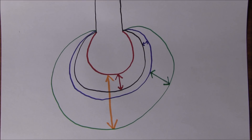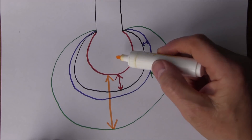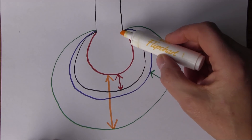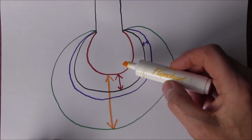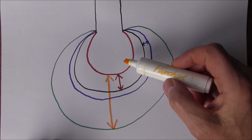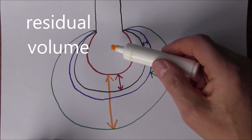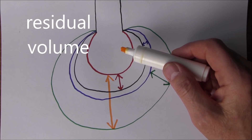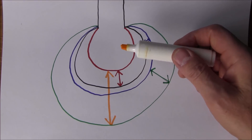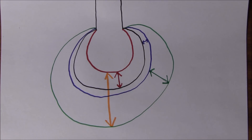We notice that when we've finished breathing out — no matter how hard we try — we've still got some air left that we can't breathe out. This is the residual volume, the air remaining that we can't exhale under physiological circumstances. The residual volume is about 1,200 mils in men and about 1,100 mils in women.